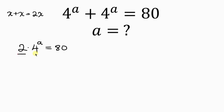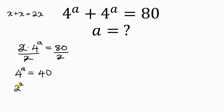Now let's divide both sides by 2. I divide the left by 2, I divide the right by 2. So 2 cancels out 2, leaving behind 4 to the a equal to 80 divided by 2, which is 40. Now let's break down 4. 4 can be written as 2 squared, and this is raised to the a, equal to 40. From indices, this power and this power can multiply, so 2 times a gives 2a. The result becomes 2 to the 2a equals 40.